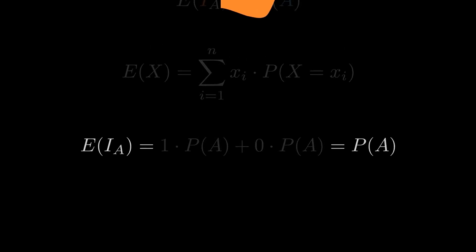Let's see an example of how indicator random variables are used to calculate expected value. Consider a game where you win one dollar if you get heads. You are going to play this game ten times.